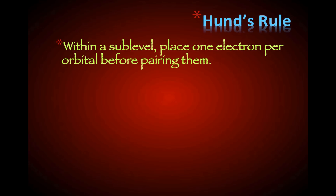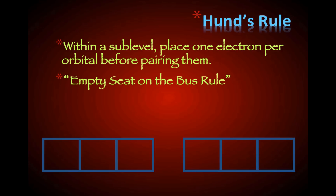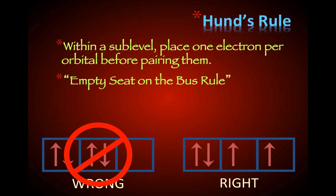Hund's rule says that within a sublevel, place one electron per orbital before pairing them. This is also known as the empty seat on the bus principle. The first diagram shown is not correct — you don't pair electrons until you have to. That is Hund's rule.